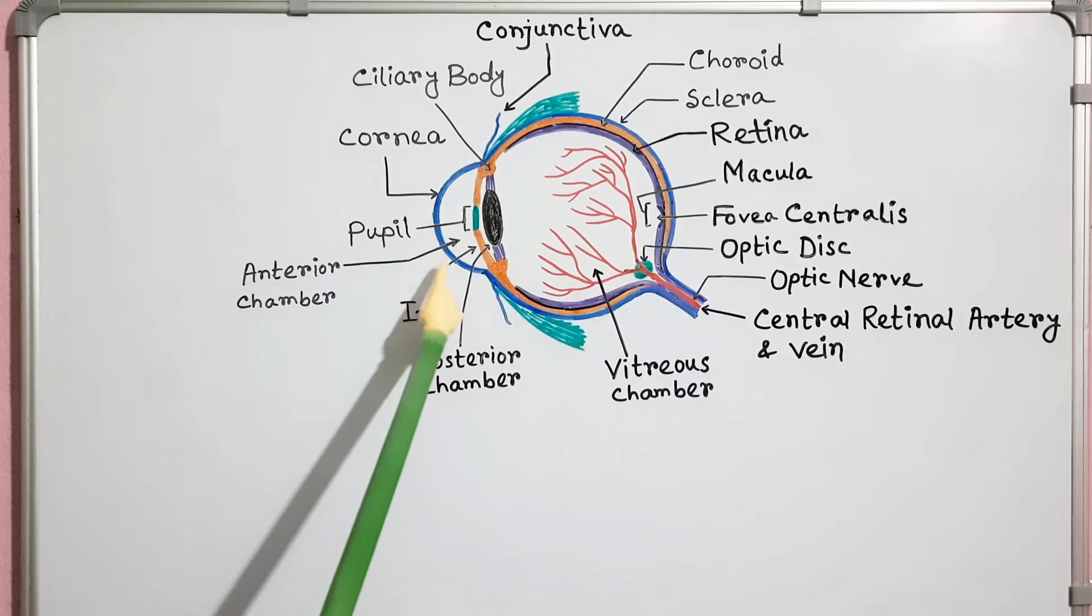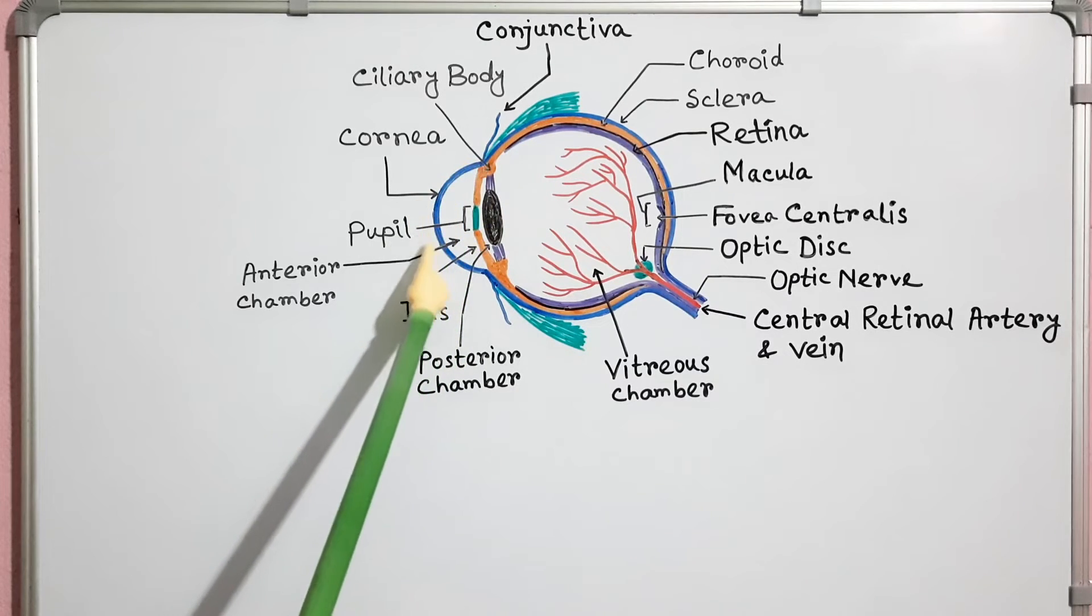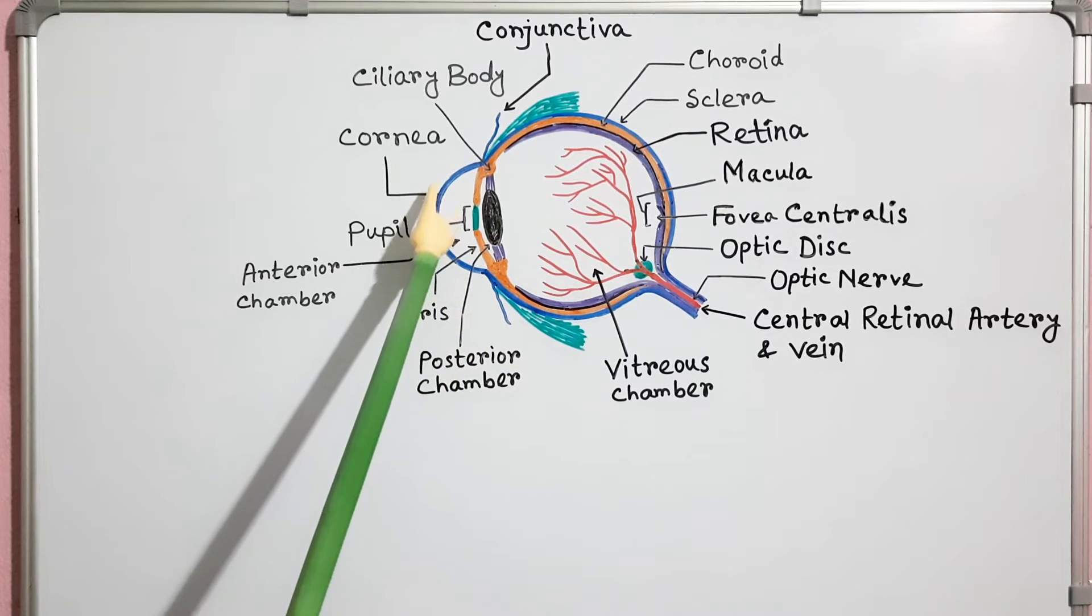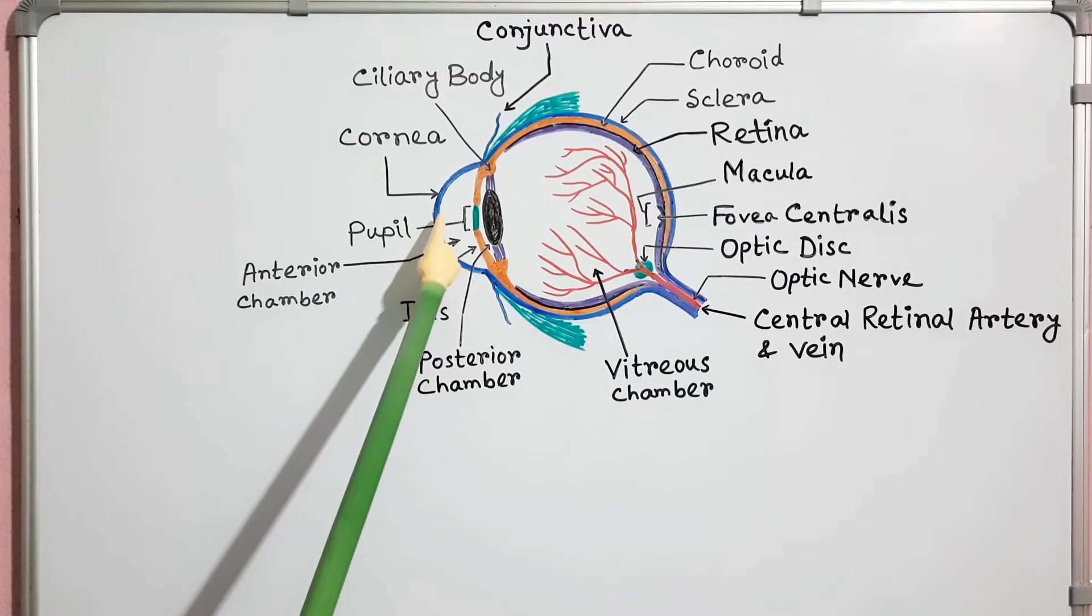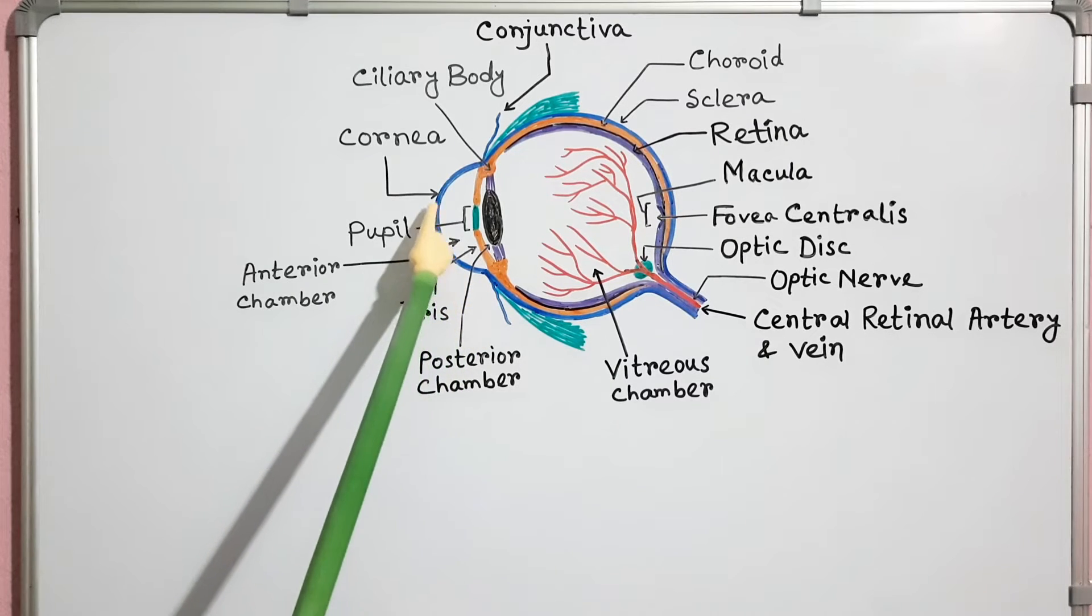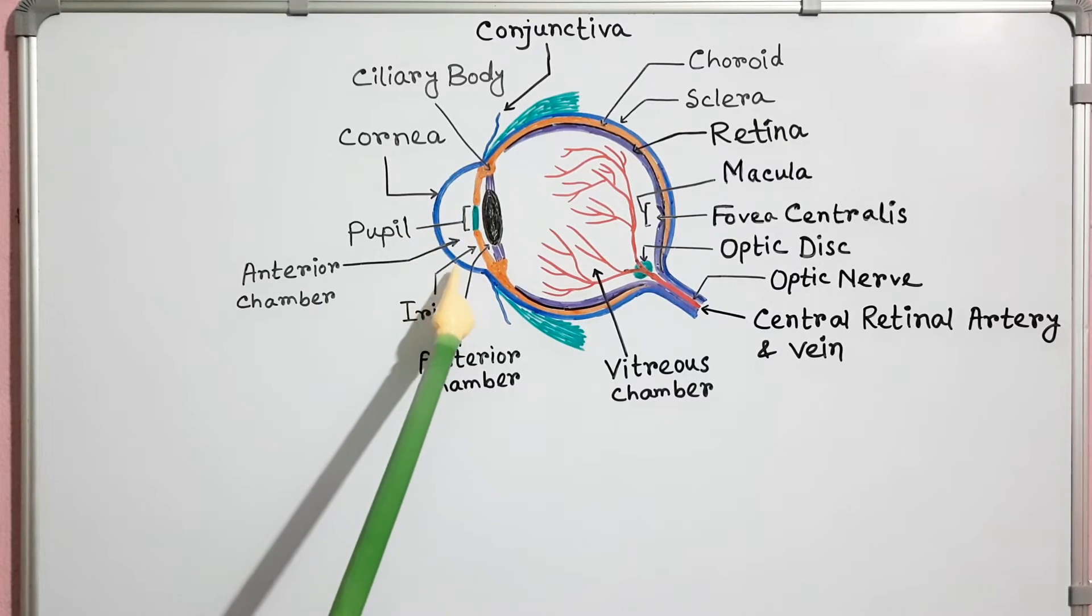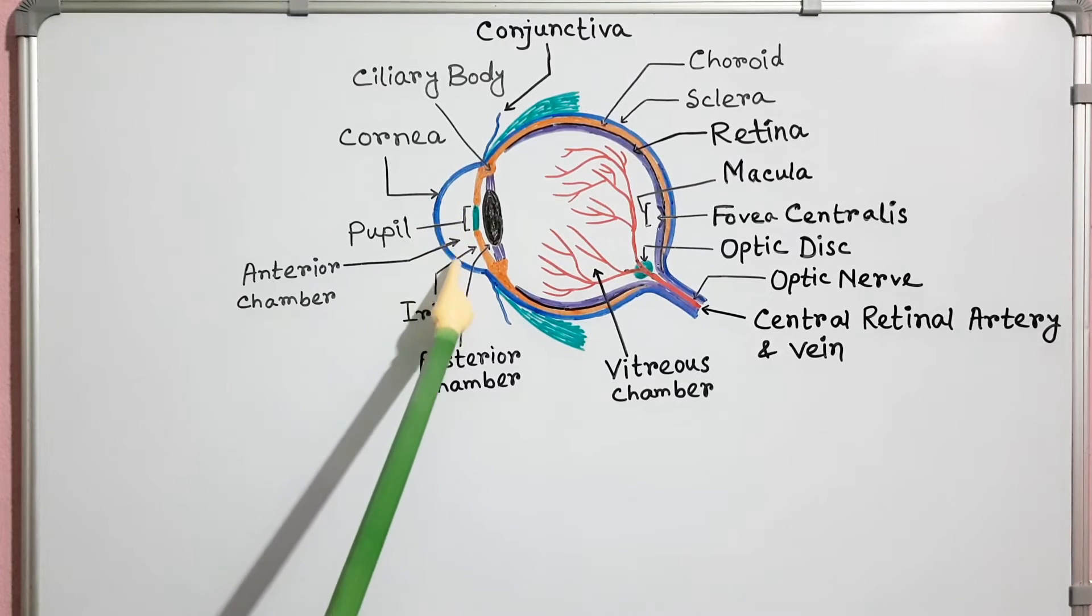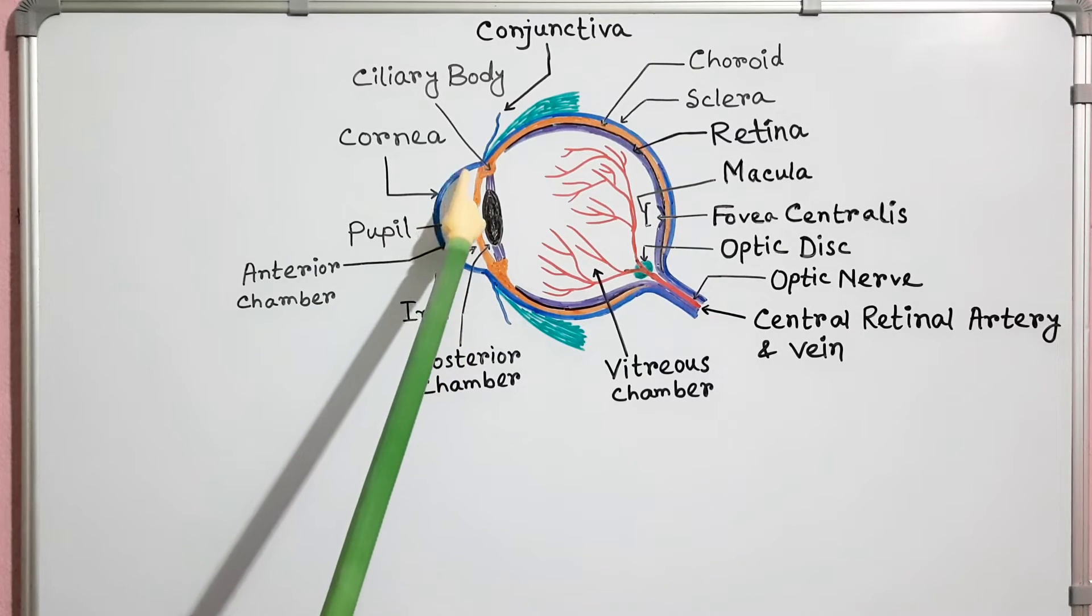This is the cornea. It covers the anterior one-sixth of the eye. It is avascular and transparent. It permits light to enter the eye. The cornea is responsible for most of the refraction of light entering the eye.